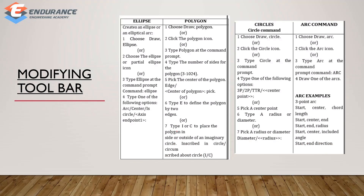So first one is Modifying Toolbar. The first topic is ellipse polygon. For ellipse polygon, you will need to create an elliptical arc. If you want to create an elliptical arc, you will need to use the draw command for ellipse. And then you can choose ellipse or the partial ellipse icon.